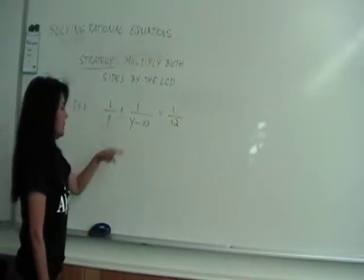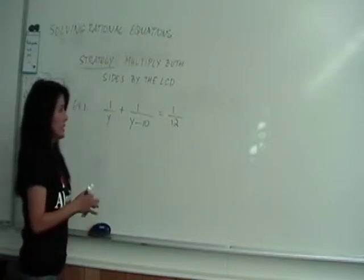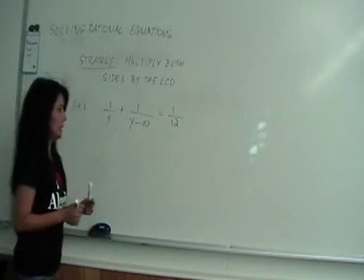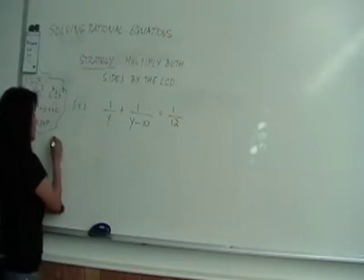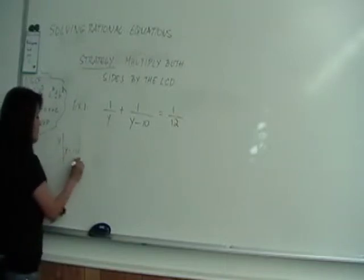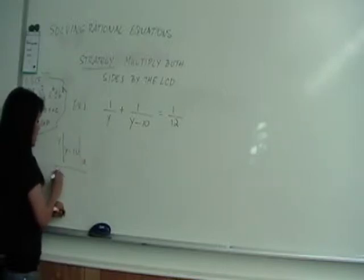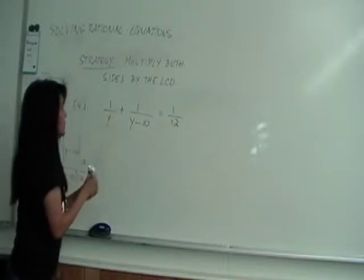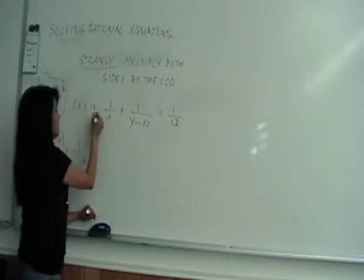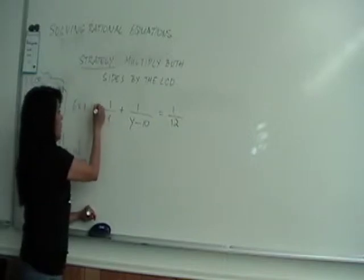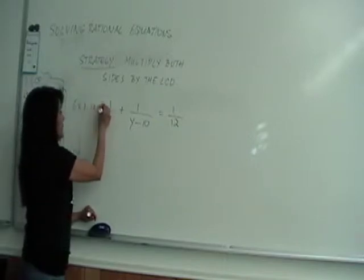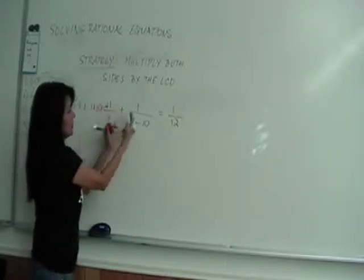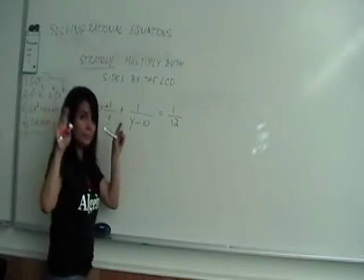We have 1 over y plus 1 over (y minus 10) is equal to 12. I have pretty simple denominators here, so if I do my align and drop, I really just need all of them. The LCD will be y times (y minus 10) times 12 — all three. So according to this strategy, I multiply across the board by 12y(y minus 10).